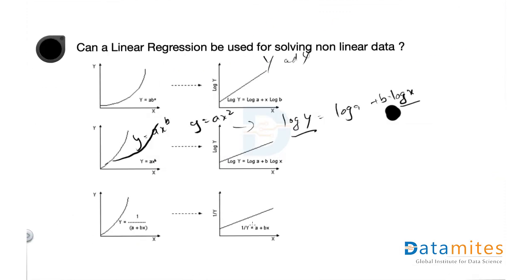So if you get this kind of question, the quick answer is no, because one of the assumptions of linear regression is that your predictor should have a linear relationship with your target. But you can extend the answer by saying there are methods to transform the data — you can transform non-linear data into a linear scale and then apply linear regression. Hope this is helpful. Thank you — I'll see you in the next video.